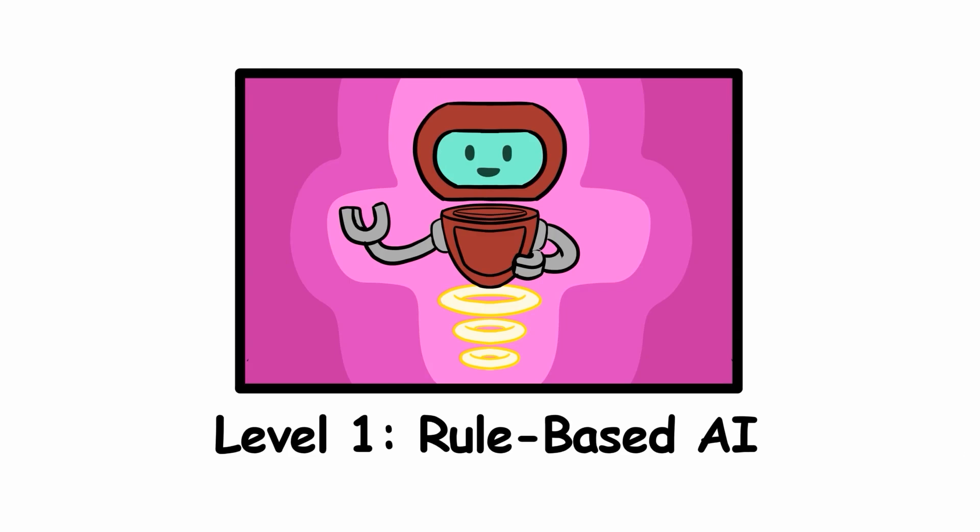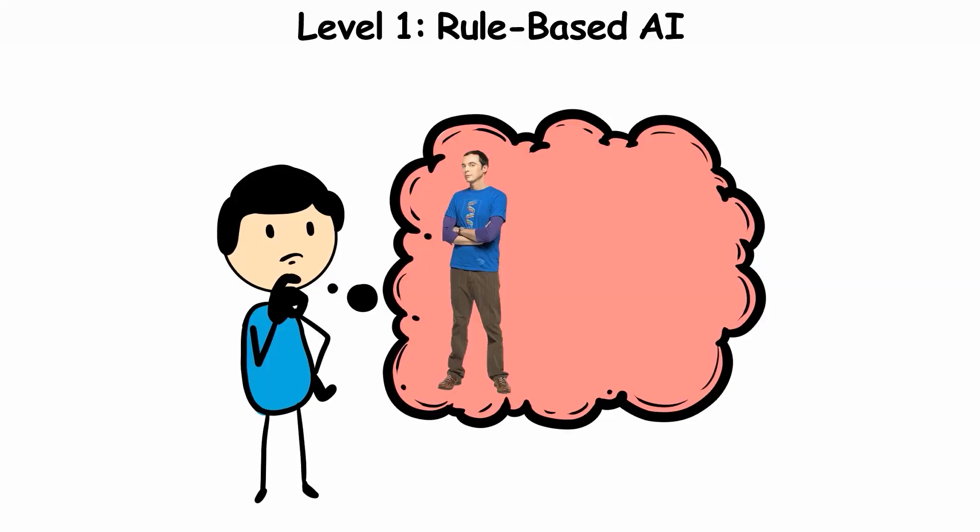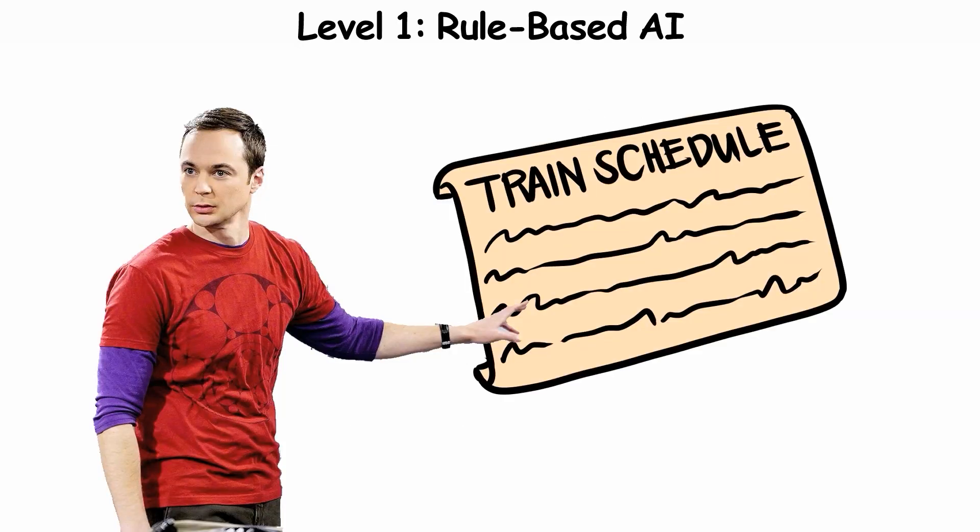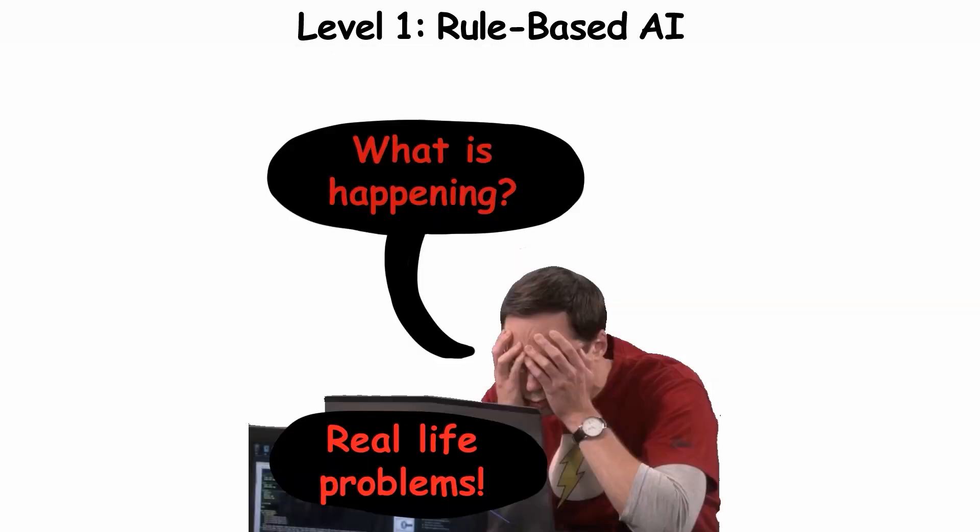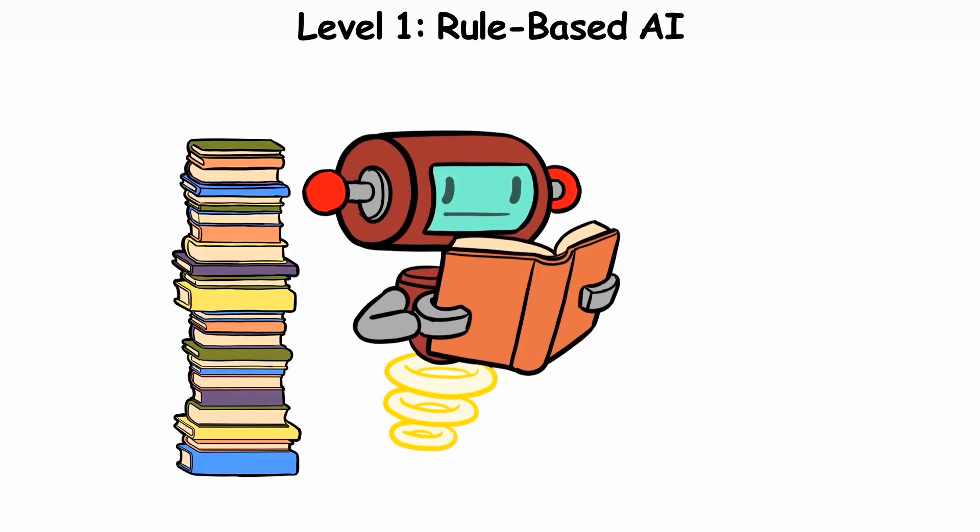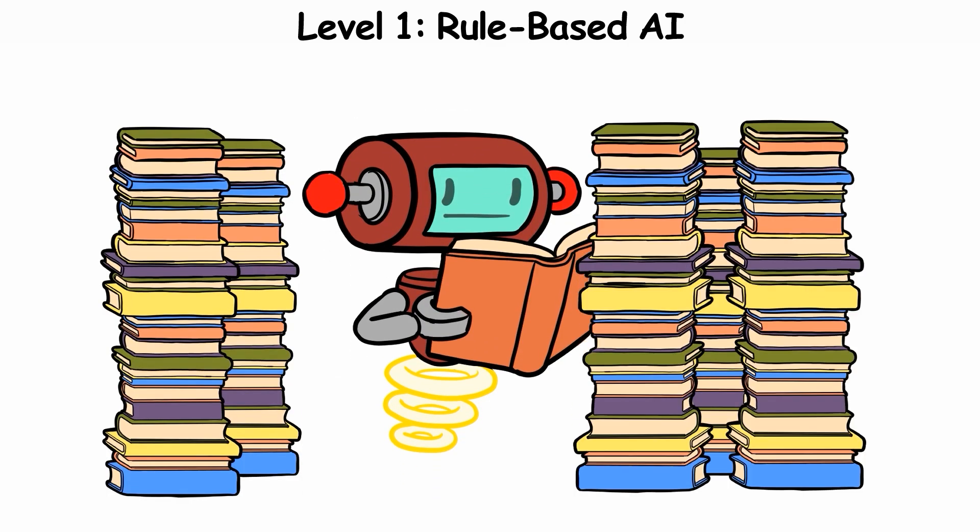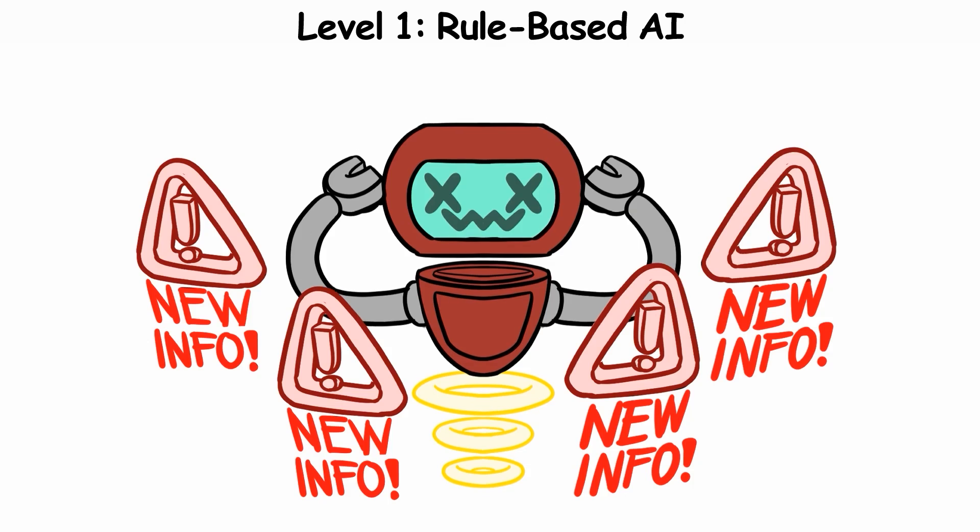Level 1, Rule-Based AI. Remember Sheldon Cooper from Big Bang Theory, the guy who memorized train schedules and entire physics books, but is hopeless when something unexpected happens? Rule-Based AI is his digital version, brilliant at following scripts, but completely lost when life goes off script.